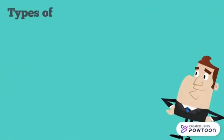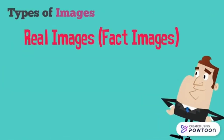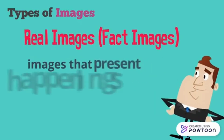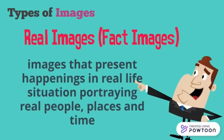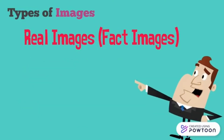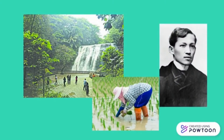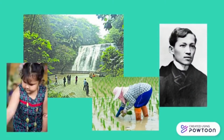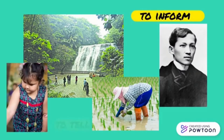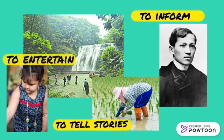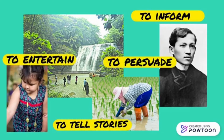There are two types of images. First, real images or fact images. These are images that present happenings in a real-life situation portraying real people, places, and time. These are the examples of real images. The purposes of these images can be to inform, to tell stories, to entertain, and to persuade.